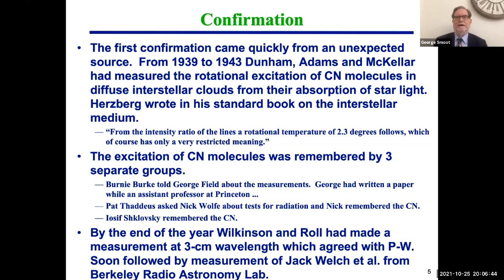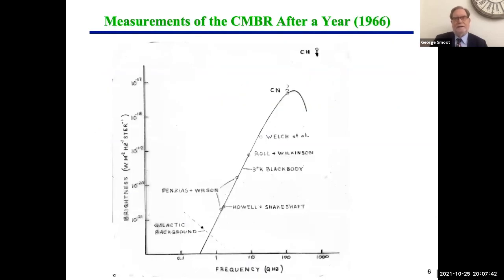Confirmation came quickly and unexpectedly because there was already a measurement people didn't know how to interpret. From 1939 to 1943, Dunham, Adams, and McKellar had been measuring the rotational excitation of cyanogen molecules in diffuse interstellar clouds from the absorption of starlight. Hertzberg wrote in his standard book on the interstellar medium that a rotational temperature of 2.3 Kelvin follows. Three separate groups remembered this: Bernie Burke and George Field; Thaddeus and Nick Wolf; and Shklovsky in the Soviet Union. Dave Wilkinson and John Roll then made measurements at 3 centimeter wavelength from Princeton, agreeing with the Penzias and Wilson result.